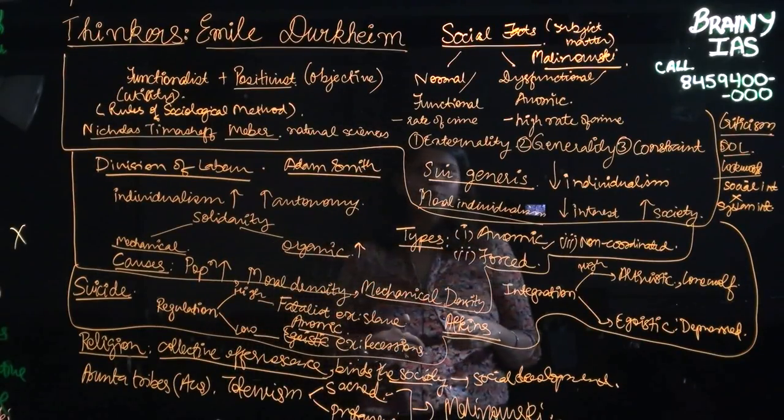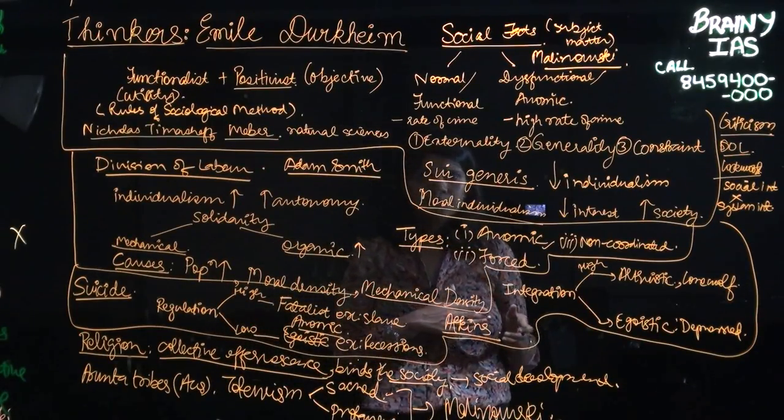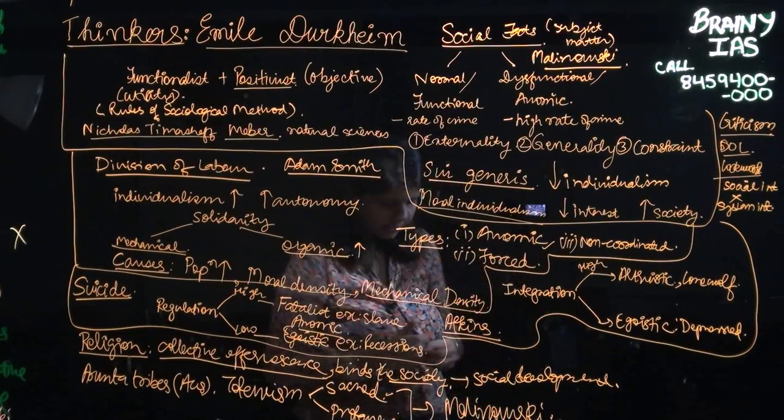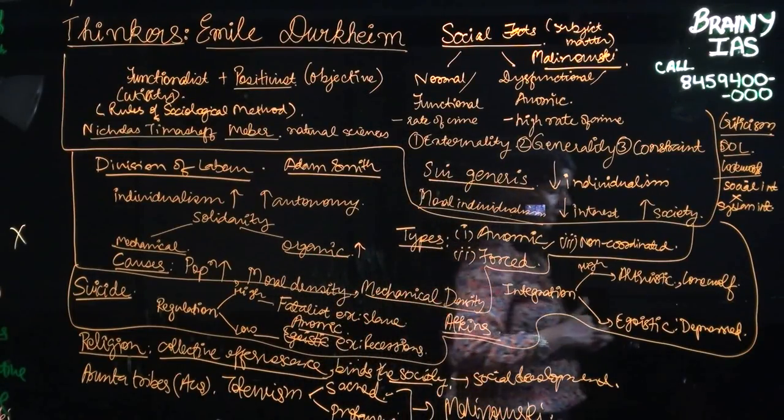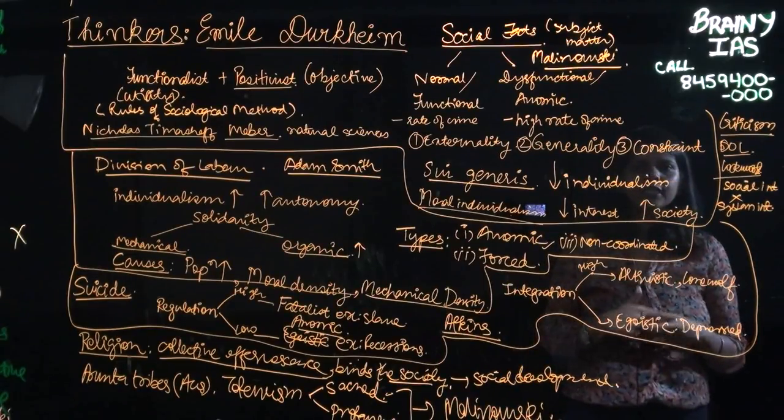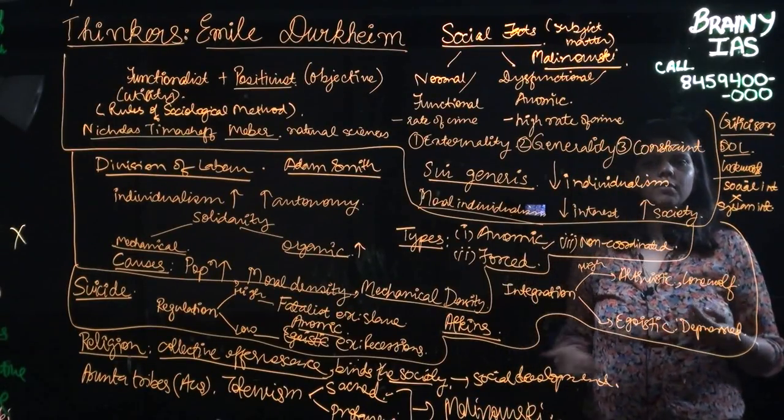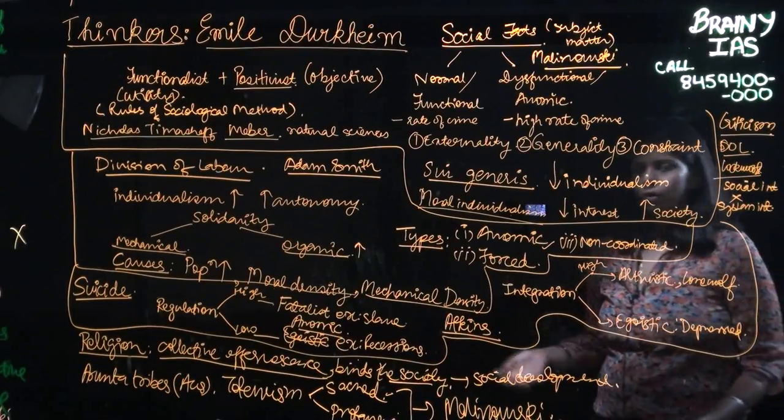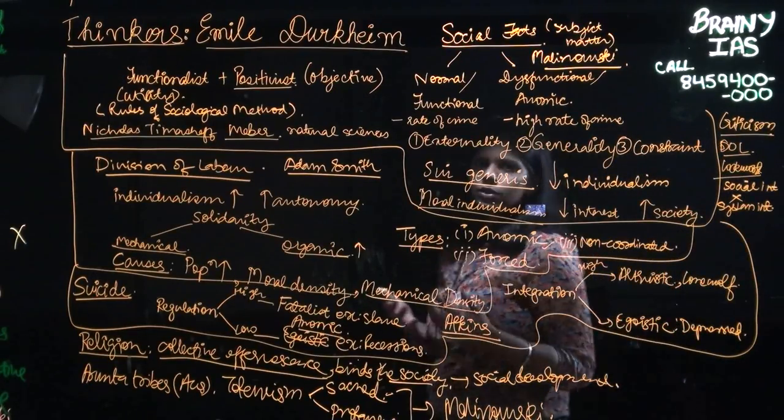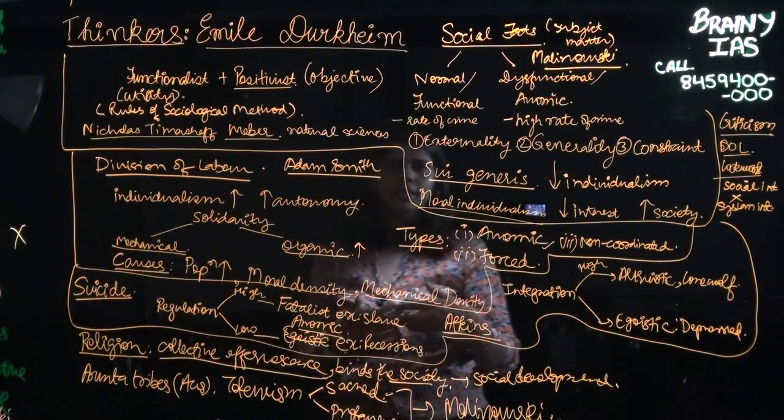Another aspect where Durkheim differs from Weber is, Durkheim does not talk of any economical aspect. He does not say that totemism or sacred and profane objects have a bearing on how a society transacts or how a society exchanges.